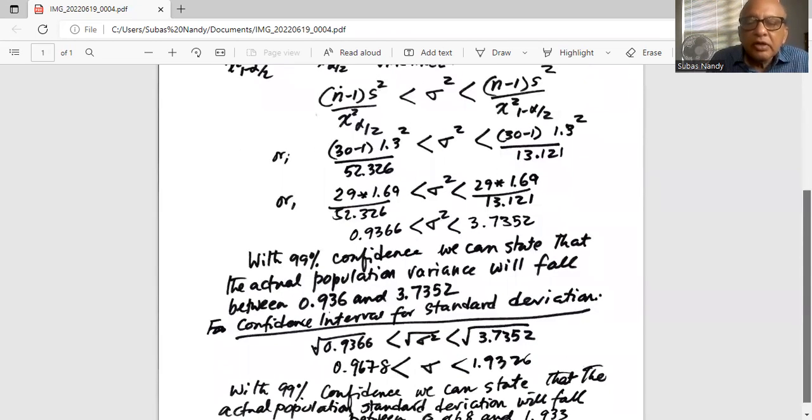Now how do we calculate the confidence interval for standard deviation? Now standard deviation is the square root of the variance. So we take square root on all sides of that inequality.